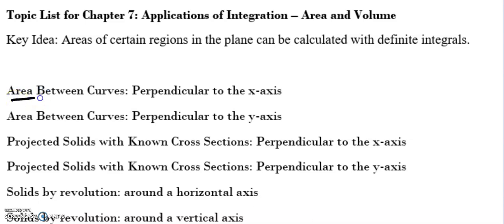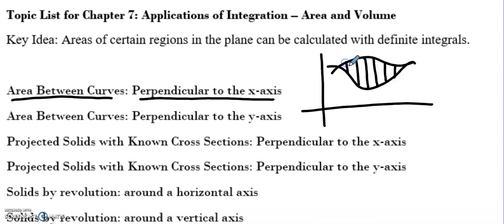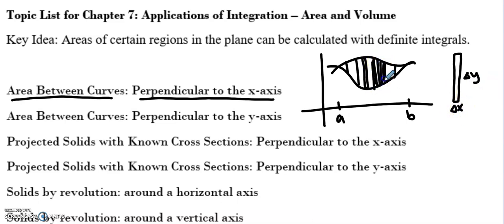In the last video we saw how to find the area between curves when drawing perpendicular to the x-axis. We had a top curve and a bottom curve and we were drawing paint strokes — top minus bottom — between our intersection points a and b. Each paint stroke represented an area with a change in x and a change in y, where delta x was tiny and delta y was top minus bottom.